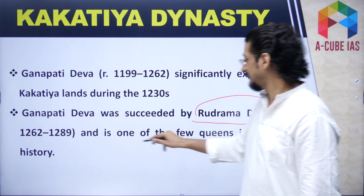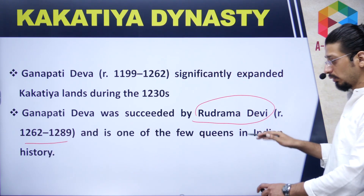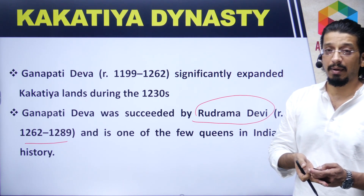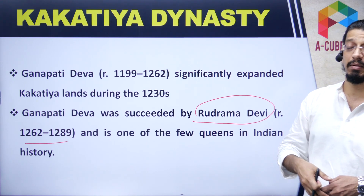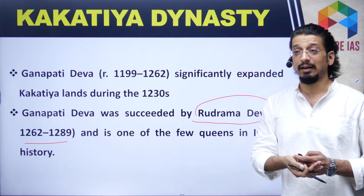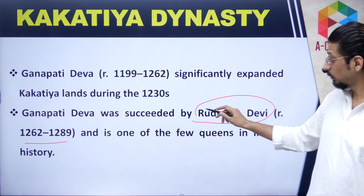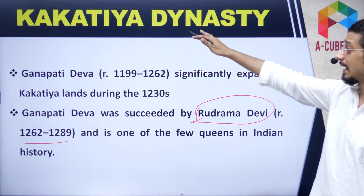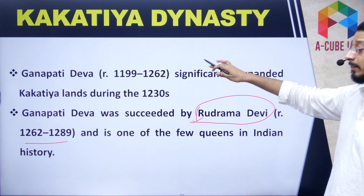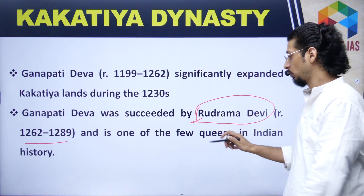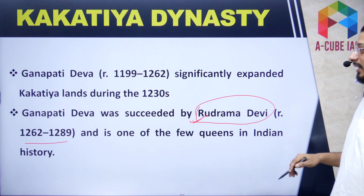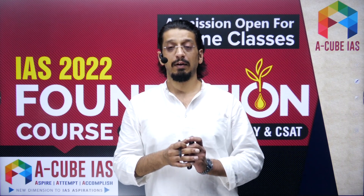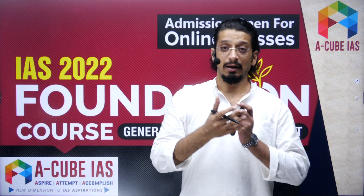Rudrama Devi also ruled in the 13th century. She is one of the few queens in Indian history — we normally talk about Jhansi ki Rani or Razia Sultan of the Delhi Sultanate, but Rudrama Devi is also notable. Instead of asking about Ramappa Temple, they can ask a question on the Kakatiya dynasty. After Rudrama Devi, the empire started to decline. So I have covered the topic of Ramappa Temple as well as the Kakatiya dynasty in full detail.